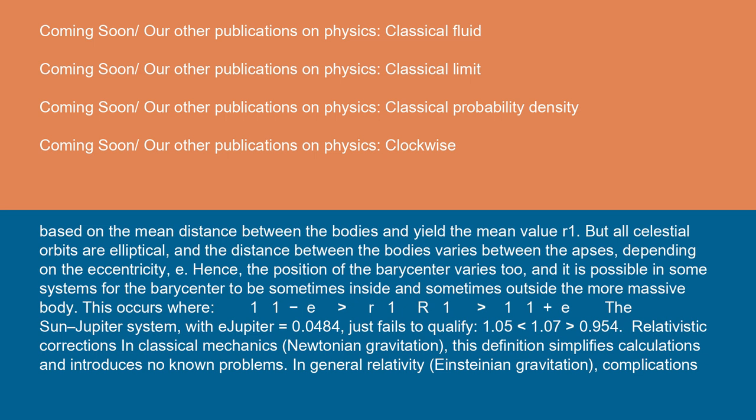This occurs where a(1 - e) > R1 > a(1 + e). The Sun-Jupiter system, with e_Jupiter = 0.0484, just fails to qualify: 1.05 < 1.07 > 0.954.